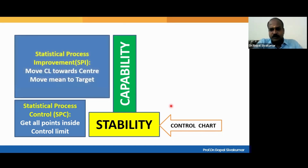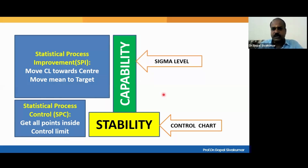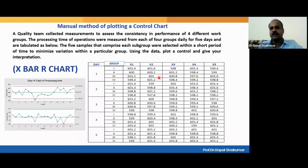Process improvement means statistically we are trying to reduce — or move — the control limits towards the center, so that the process becomes more and more consistent. You can also try to move the entire process towards the target: move the center line towards any target value — if it is a profit, try to move it upward; if it is an expense, try to move it downward. This activity of moving the control limits closer to the center and moving the center line towards the target is called process improvement. We measure this in terms of sigma level, yield, DPMO, Cp, Cpk, Pp, or Ppk. So we understand the difference between process control and process improvement — control is the foundation for improvement.